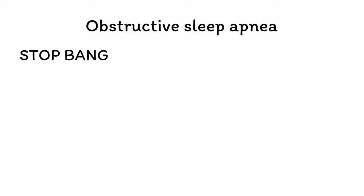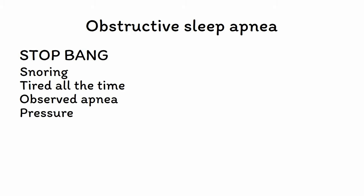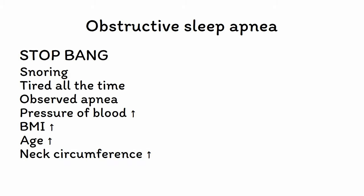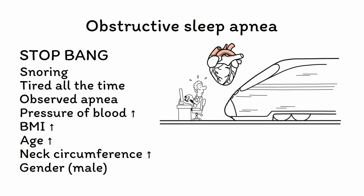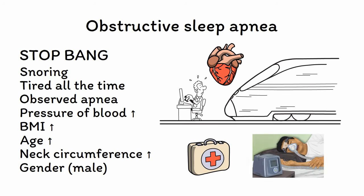You can use the mnemonic STOP BANG to remember the specific factors predictive of OSA, including snoring loudly, feeling tired all the time, apneic episodes that have been directly observed by someone else, high blood pressure, high body mass index, older age, a large neck circumference, and male gender. OSA is a major threat to health as untreated cases are associated with a higher risk of heart attack and stroke. Treatment for OSA involves using a continuous positive airway pressure, or CPAP, machine that provides a steady stream of air to keep the airway from getting compressed.